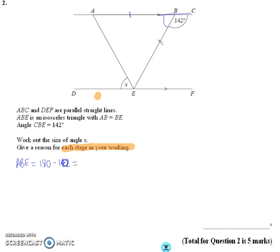That gives us 38 degrees. And I'm going to state my reason. So my reason is angles on a straight line equal 180 degrees. So that's the first calculation I did, and I gave a reason for it.